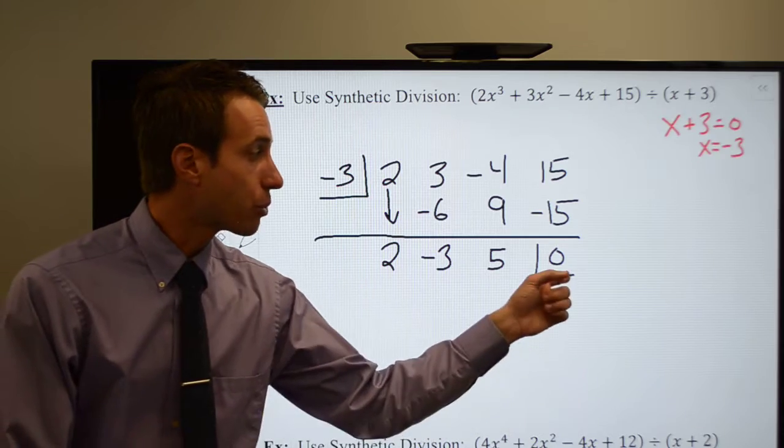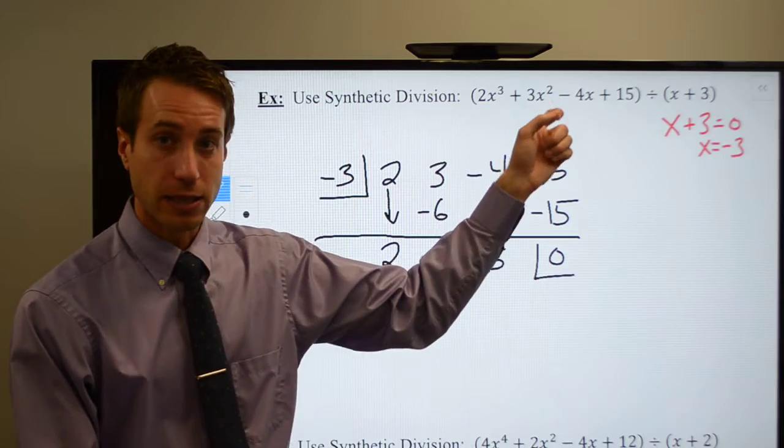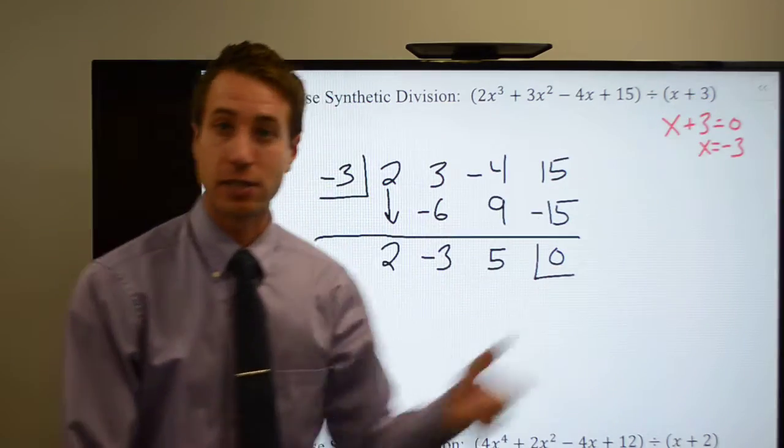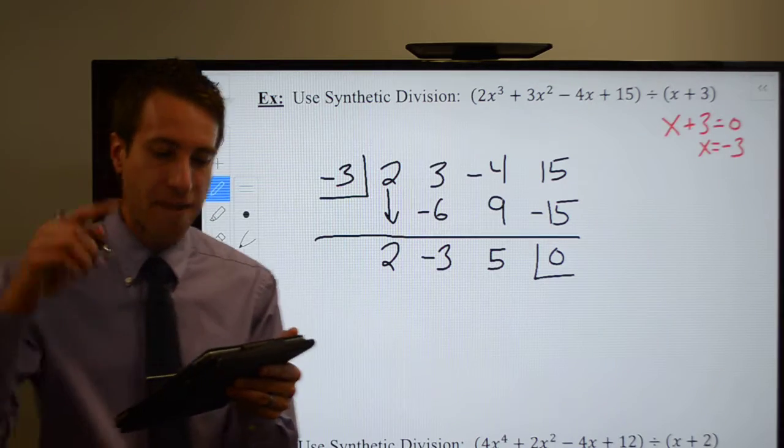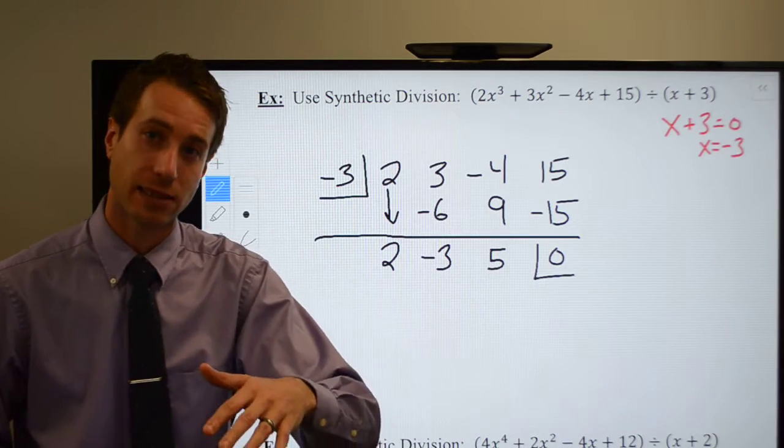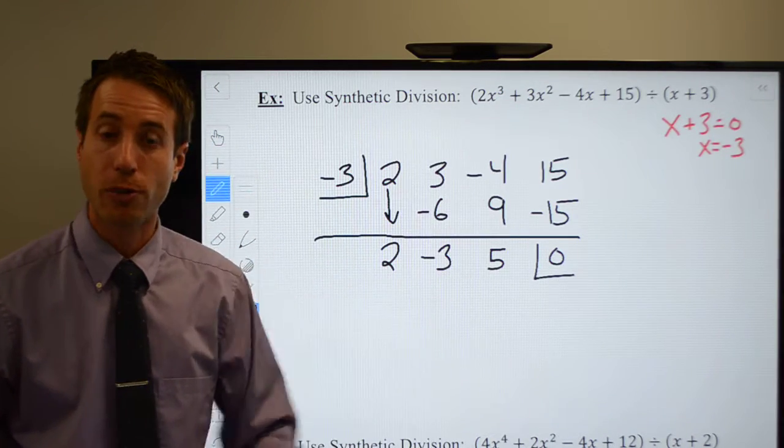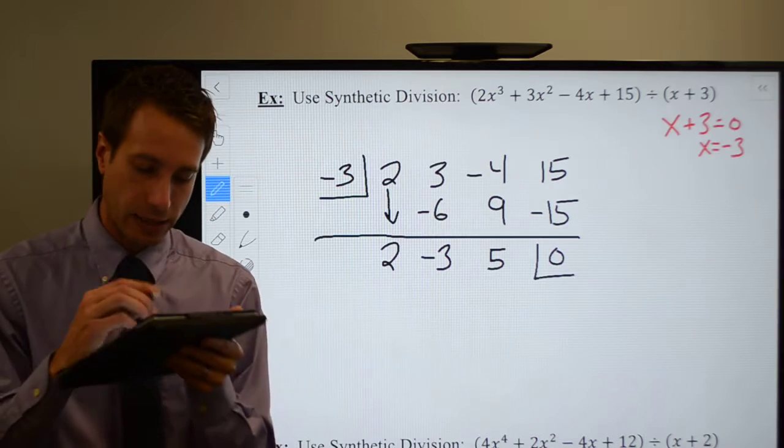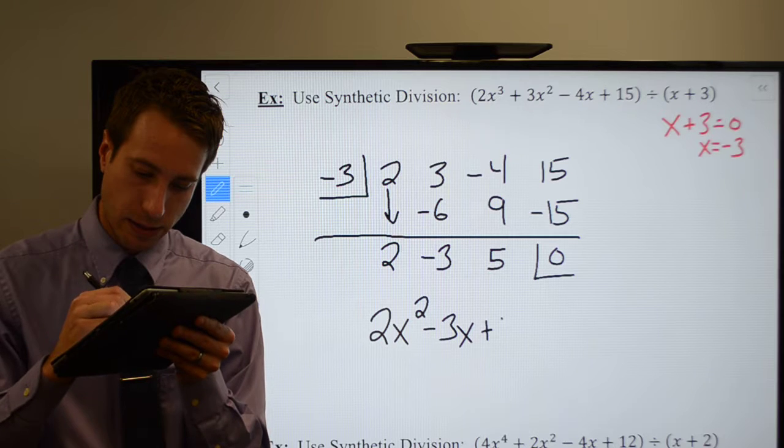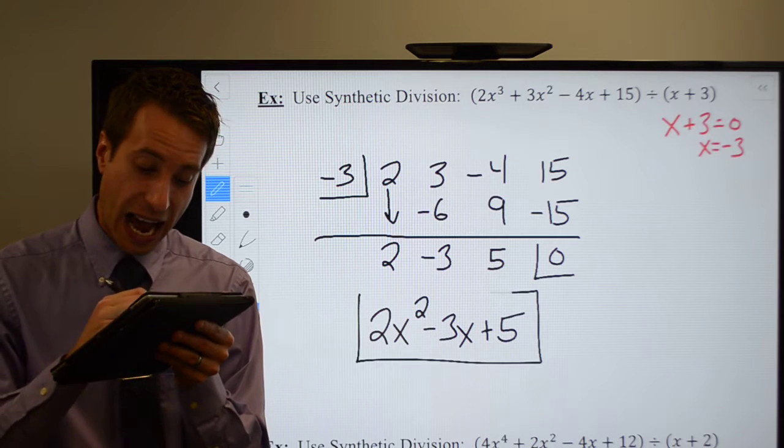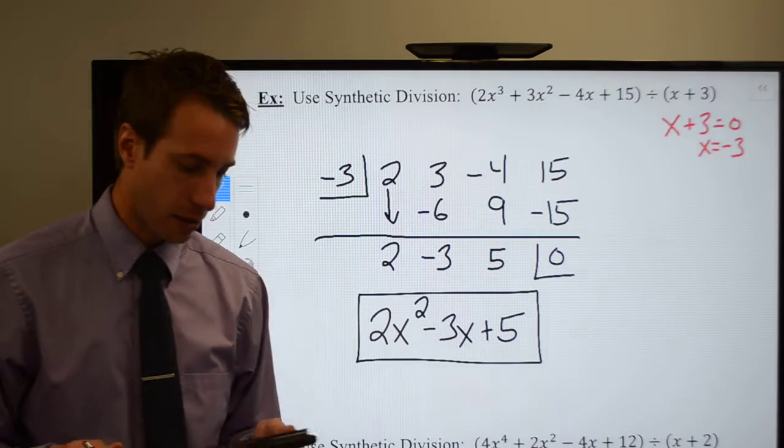I wind up with a remainder of zero, which means my dividend is evenly divisible by my divisor. I don't have anything left over when I do my division. My final answer will always be one degree less than my original polynomial, which was a third degree polynomial. So my answer is going to be a second degree polynomial: two x squared minus three x plus five. I don't have a remainder. My remainder is zero. You're all set.